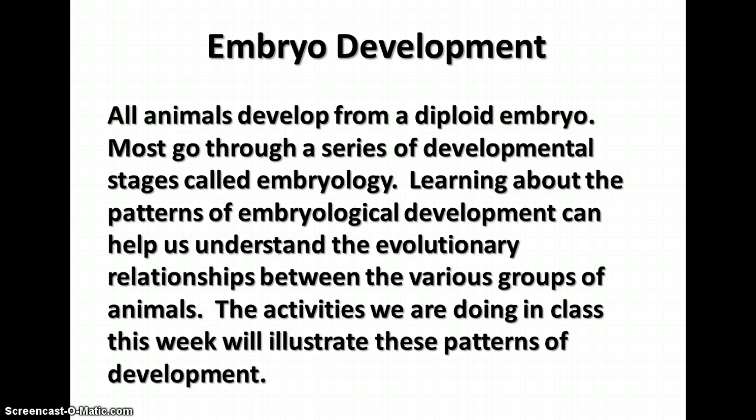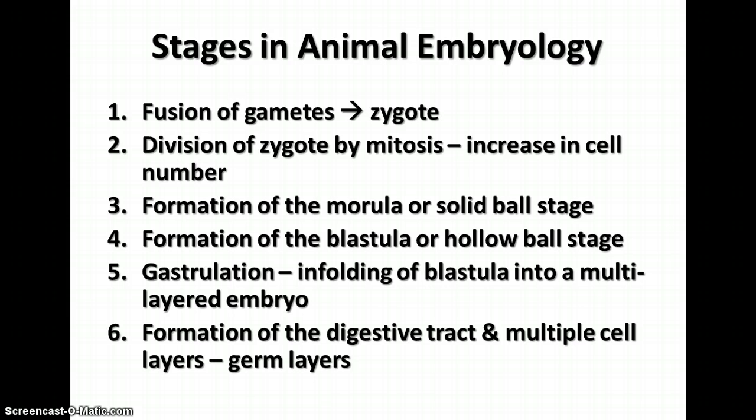The first stage is the fusion of gametes to produce the zygote. The zygote is a single cell that is diploid because it is produced by the fusion of two haploid cells. Once you have the zygote, in order to become multicellular — which all animals are — you have to increase the number of cells. This occurs by mitosis. At this point in time, you have basically a solid ball of cells. This is called the morula.